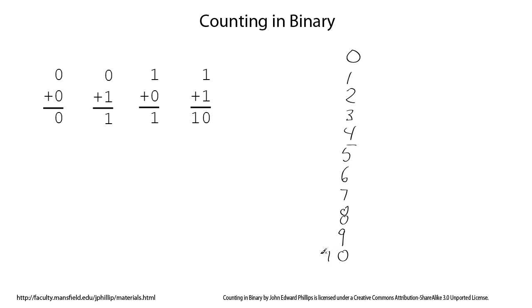So we do the same kind of thing in binary. The difference is we only have two symbols. In binary, we have a 0 and a 1. So if we count in binary, we start with 0, and then we have a 1.